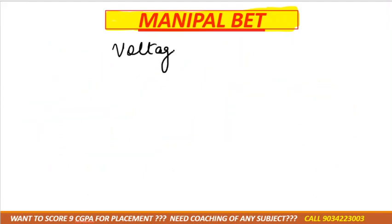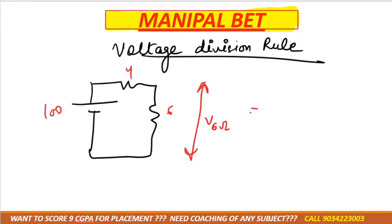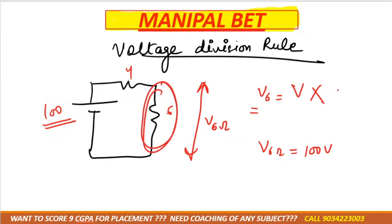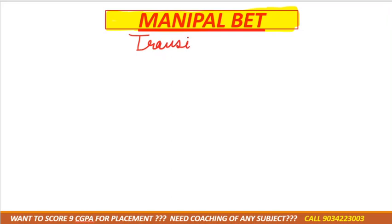Similarly, the voltage division rule is applicable only in series circuits and is used to calculate voltage across a specific resistor. To calculate voltage across 6 ohm in a series circuit with total voltage 100 volts: V6 = 100 × 6 / (6 + 4). To calculate voltage across 4 ohm: V4 = 100 × 4 / (sum of all resistors).